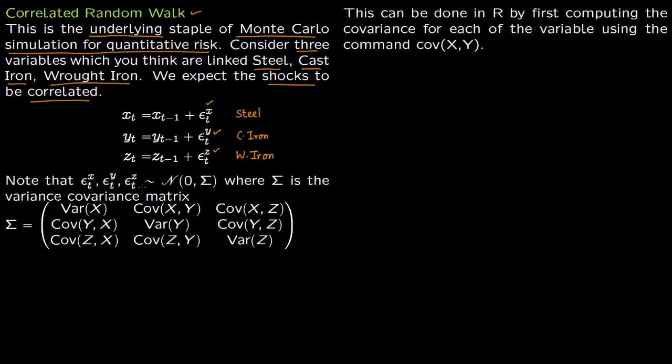Correlated means that they come from a normal distribution with mean zero and you have a covariance matrix where this Σ is the variance covariance matrix. We are putting X as steel, Y as cast iron, and Z as wrought iron. So XYZ. You build a matrix like this. We have to first build this matrix Σ.